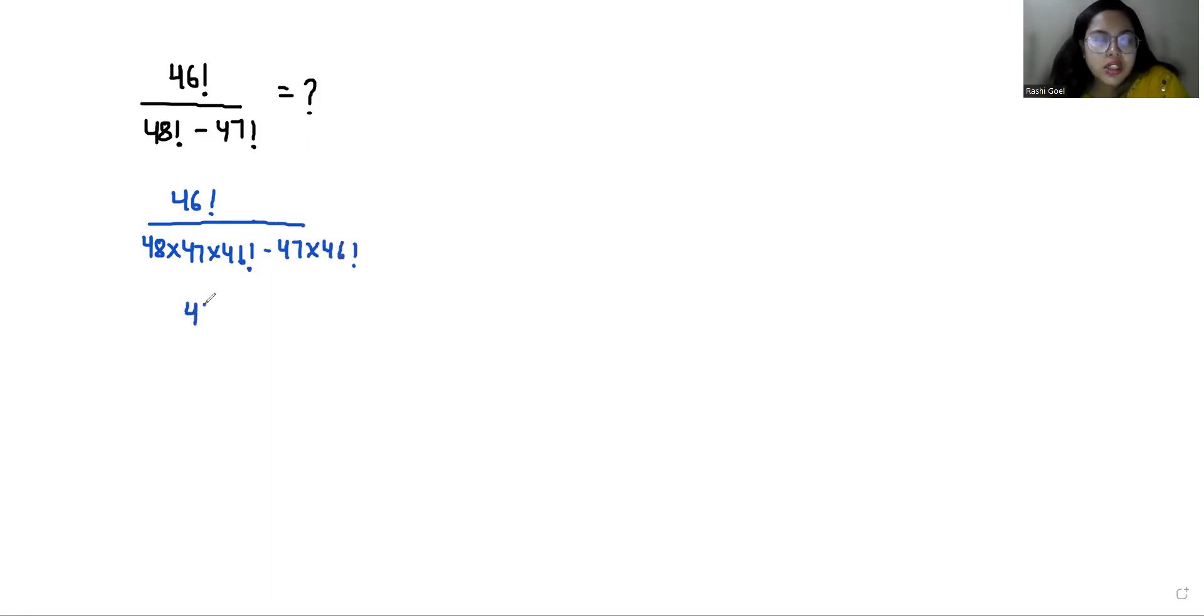Now I can take 46 factorial common from the denominator. So what is left? 48 times 47 minus 47. So we can cancel out this.